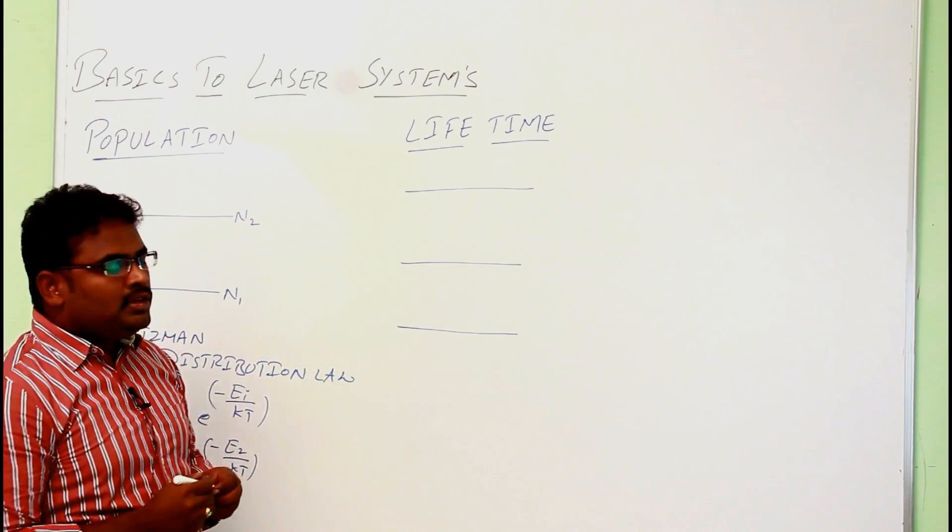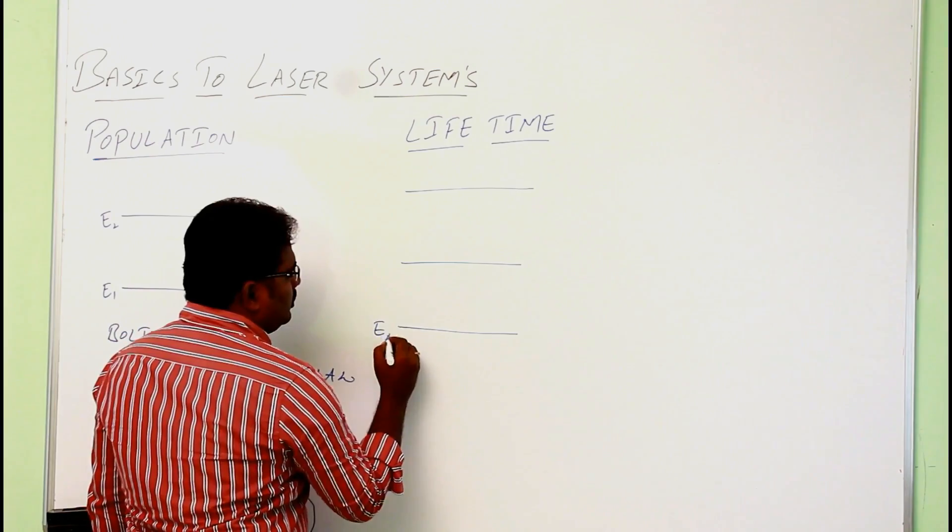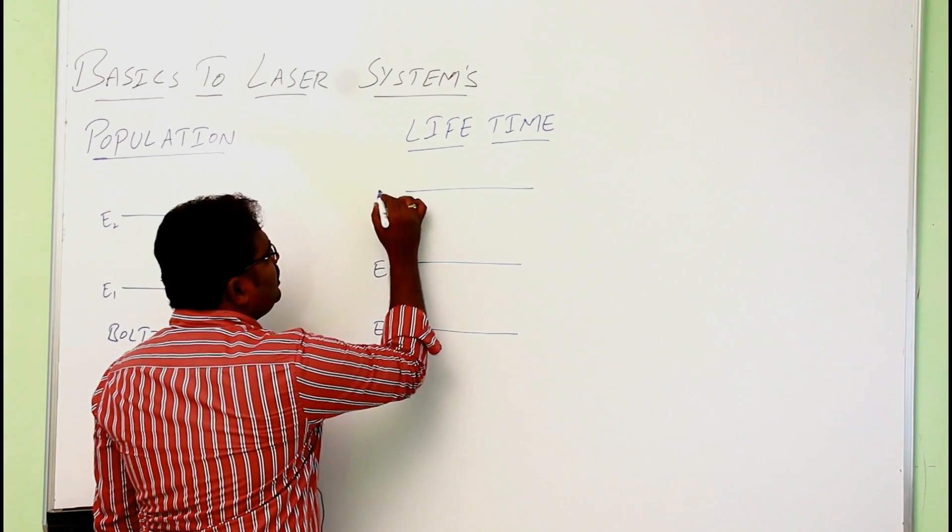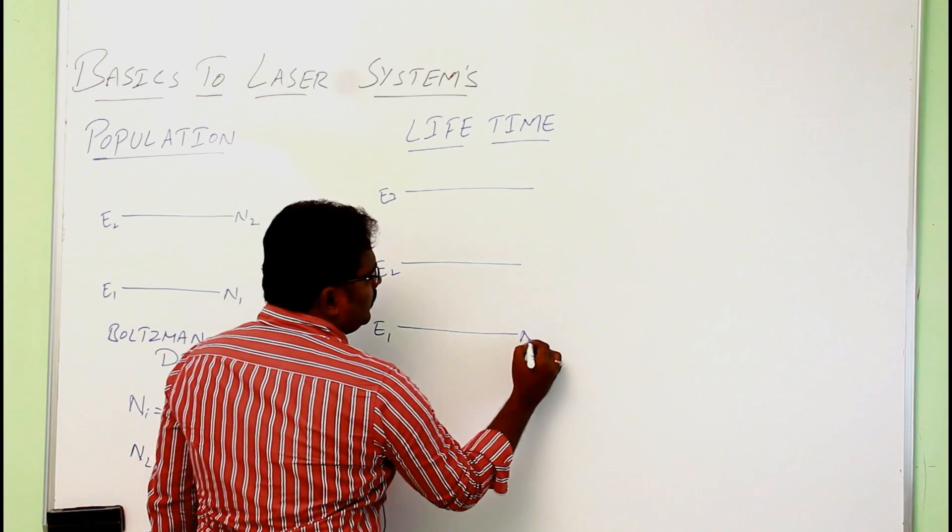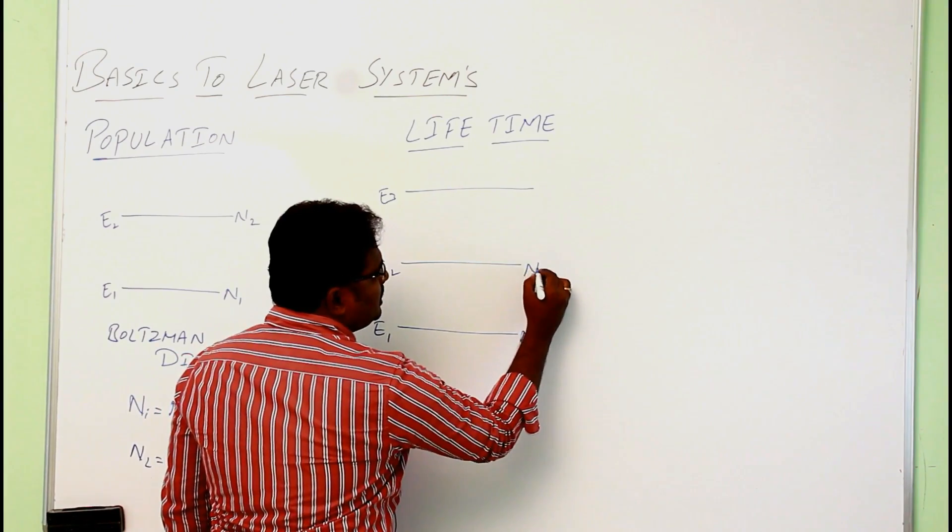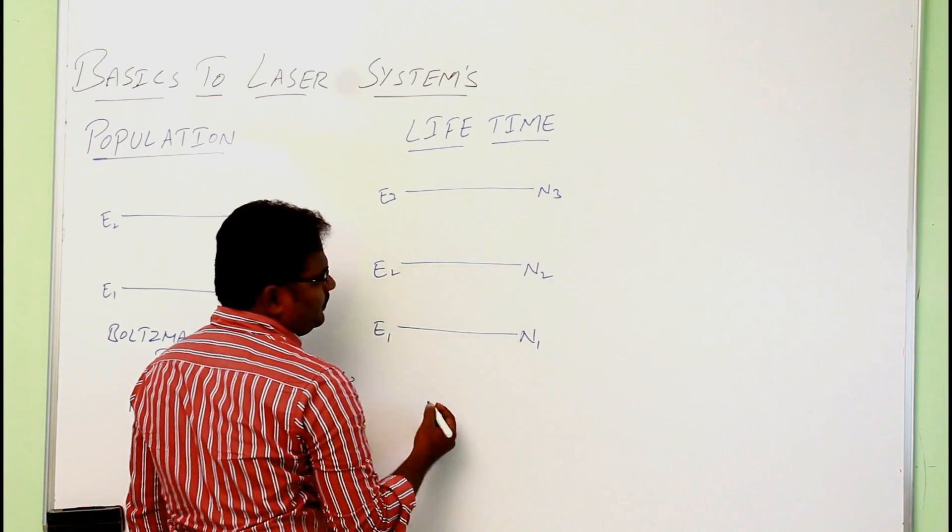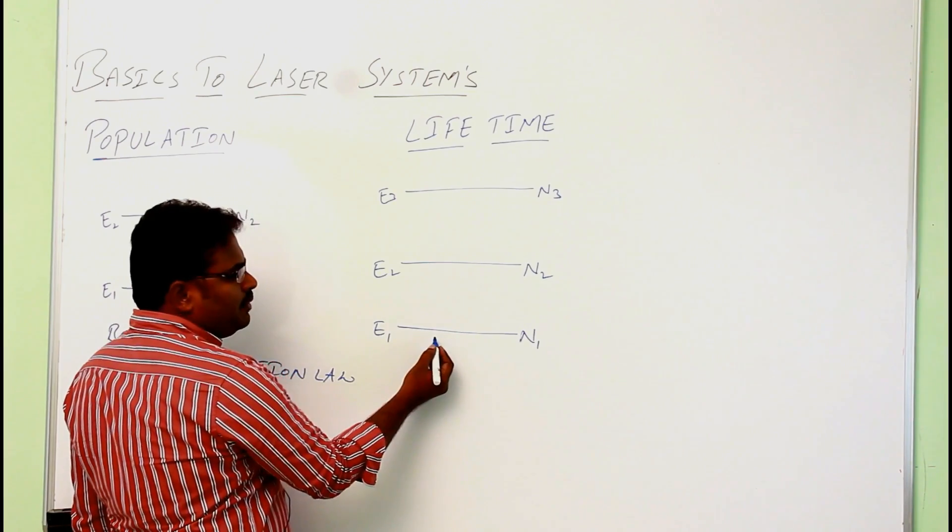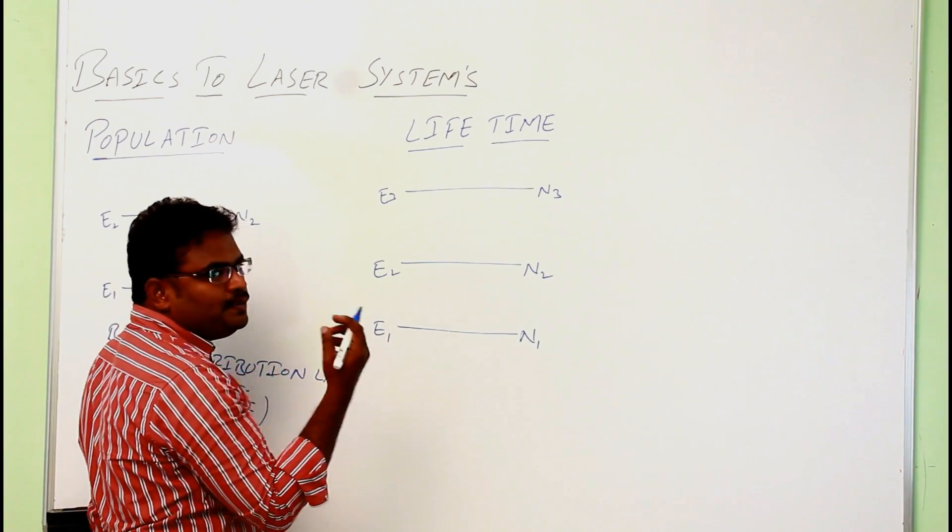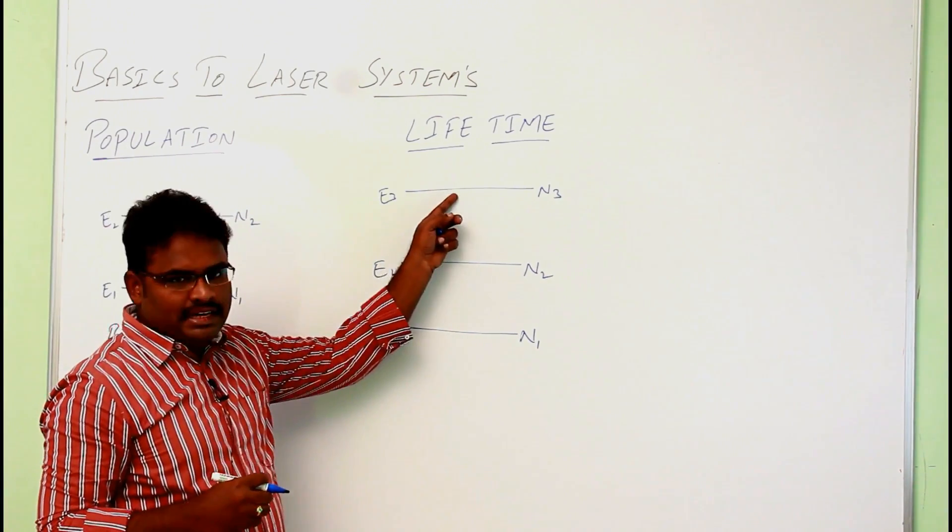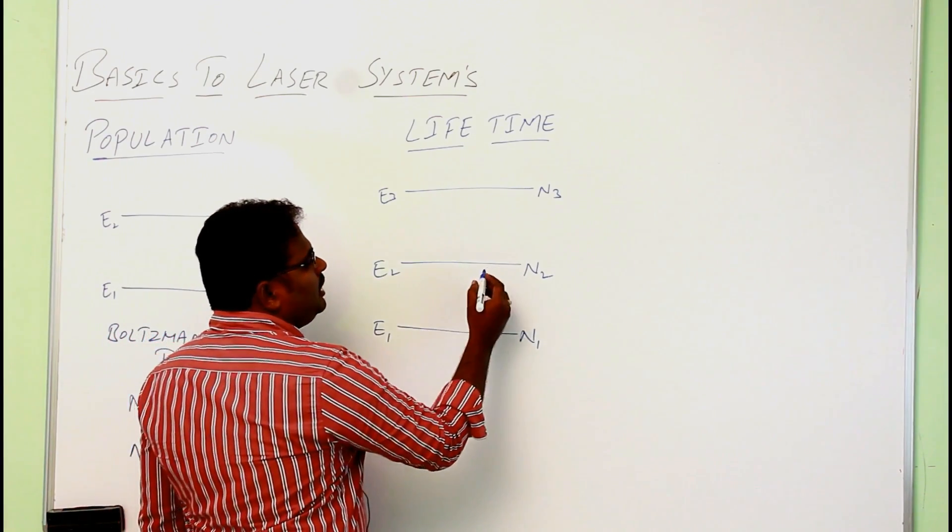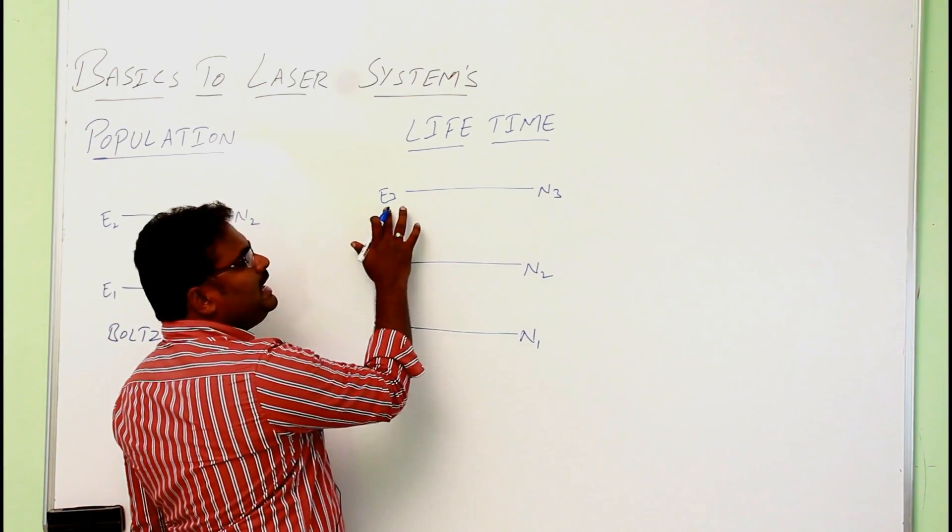Suppose there are three energy levels E1, E2, E3. Let there be N1 number of atoms in ground state, N2 and N3 in the excited states. By supplying a sufficient amount of energy, the atoms will absorb the energy and go to the excited states. Here it will spend different times based on the energy of that particular level.